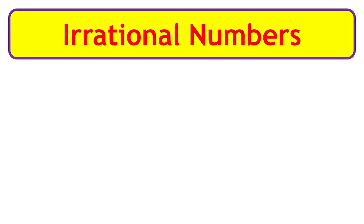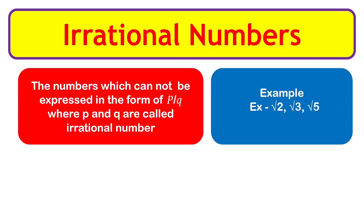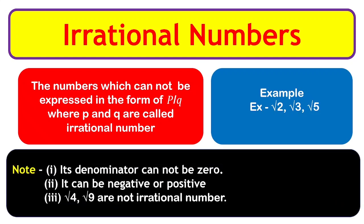Irrational numbers: the numbers which cannot be expressed in the form of p/q — that is, which cannot be expressed as a fraction — are called irrational numbers. Examples: √2, √3, √5. Notes: the denominator cannot be 0; they can be negative or positive. Also, √4 and √9 are not irrational numbers because √4 equals 2 and √9 equals 3, which are whole numbers.